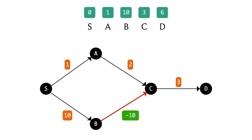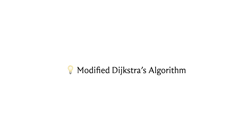At this point the algorithm cannot do anything meaningful — the queue is empty. There is no way to register this improved distance and make sense of it. This is why Dijkstra's algorithm fails in the presence of negative edge weights, and this example illustrates that.